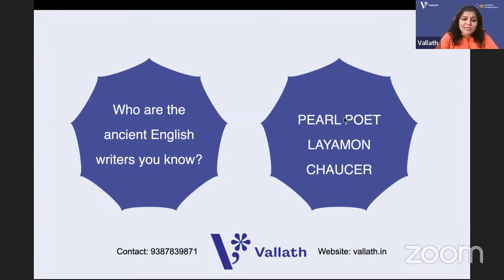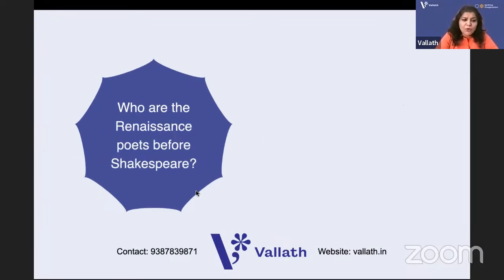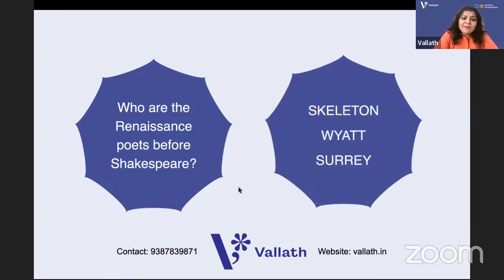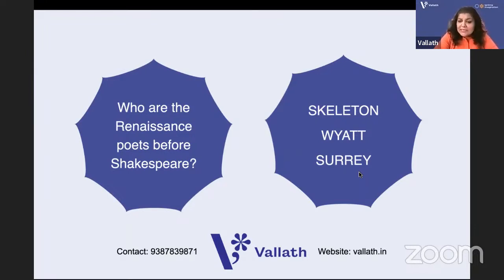Moving to Renaissance and Elizabethan poets before Shakespeare: there were poets like John Skelton, who wrote Skeltonic verse - very rugged verse. Wyatt introduced the sonnet and Surrey introduced blank verse; they wrote poetry in Tottel's Miscellany. Sidney was there with Astrophel and Stella, and Spenser with Amoretti and The Faerie Queene, though Spenser was older than Shakespeare.